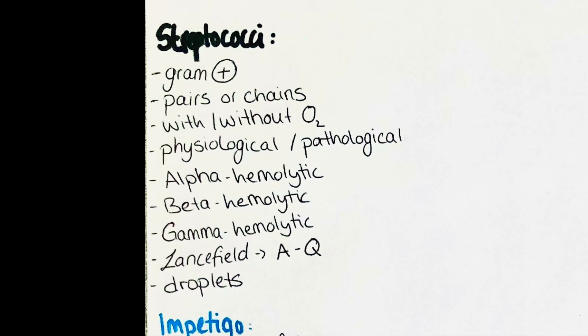We differentiate three types of streptococci depending on their ability to lyse red blood cells. The first type are alpha-hemolytic streptococci, which can partially lyse erythrocytes, leading to the formation of a green film on the petri dish. Beta-hemolyzing streptococci can completely lyse red blood cells, and gamma-hemolyzing streptococci cannot lyse erythrocytes.